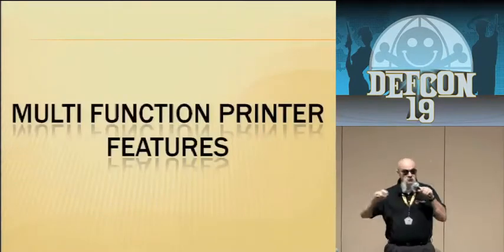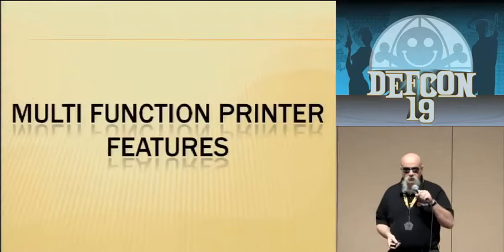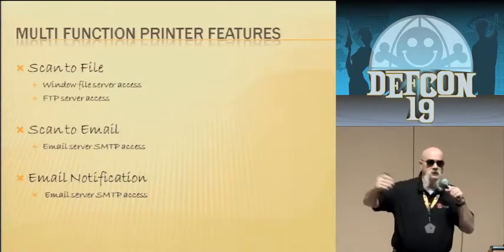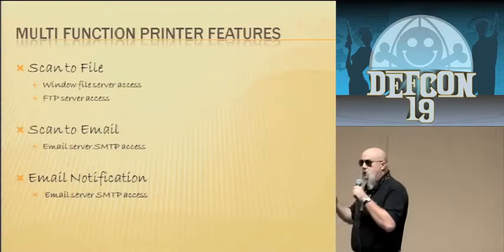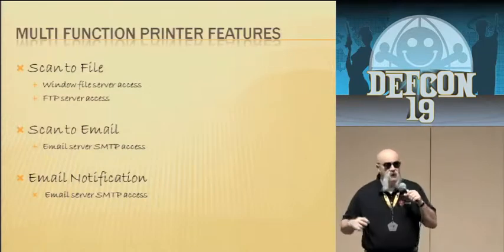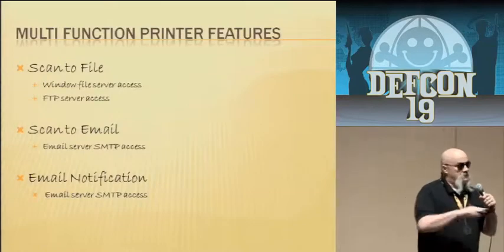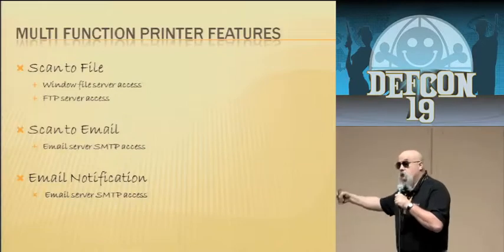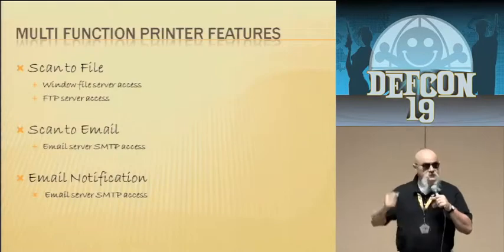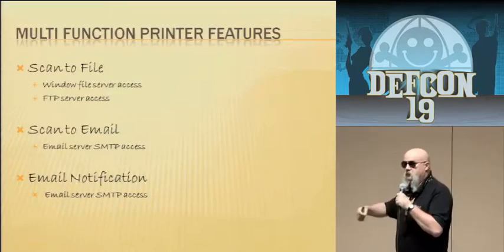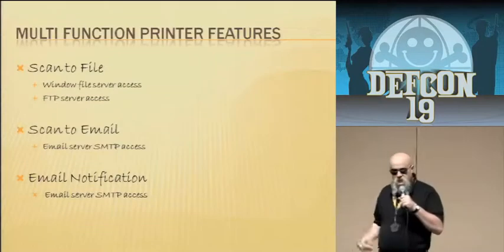Let's start by talking about multifunction printer features. I don't know how many people have actually logged onto the web interface on a multifunction printer, but that's generally what we're going to be talking about today. There's a wealth of features and functions from which information can be pulled. An example is scan-to-file functionality — the ability to walk up to that multifunction printer, scan data, and have it store it on a Microsoft file server or FTP server. Also scan-to-email, the ability to scan and have it go out in email. These have to integrate into SMTP servers and SMB authentication onto Windows devices.